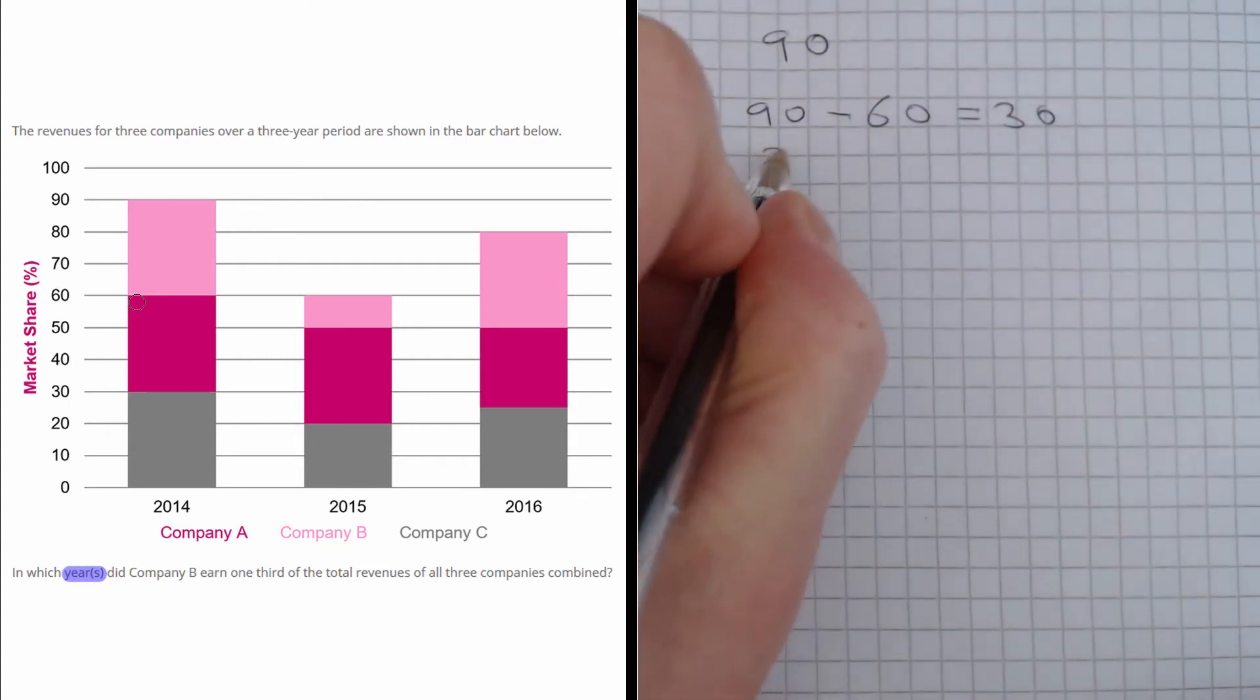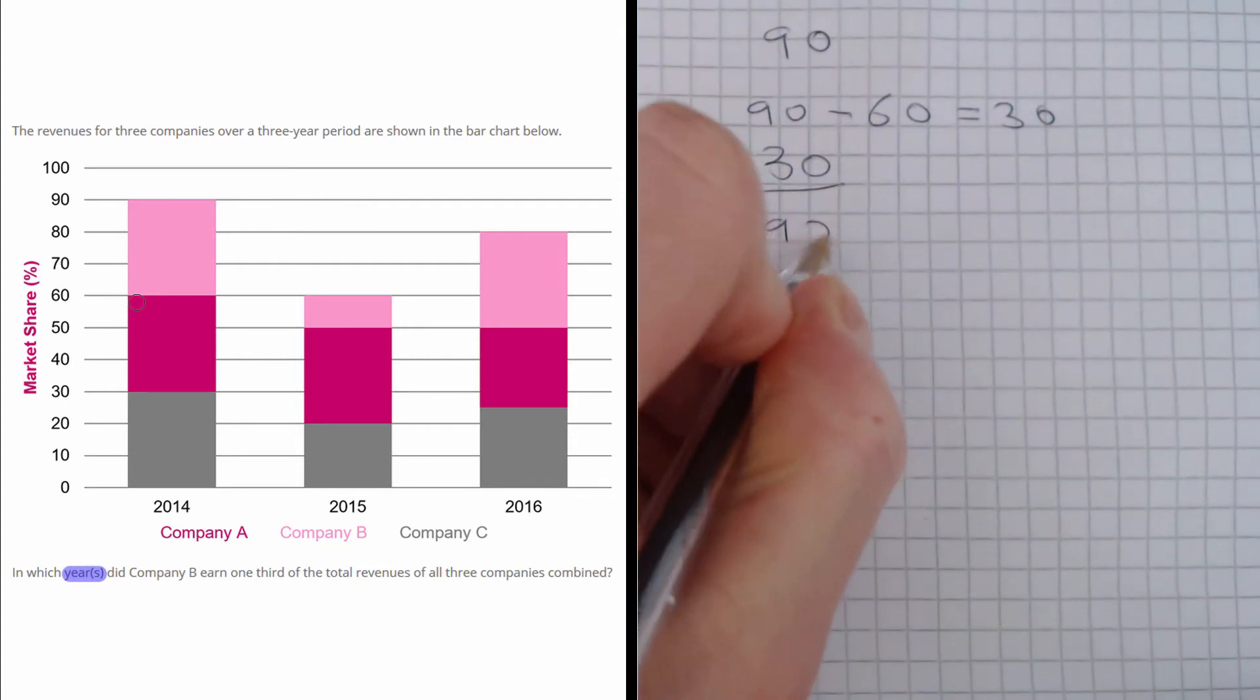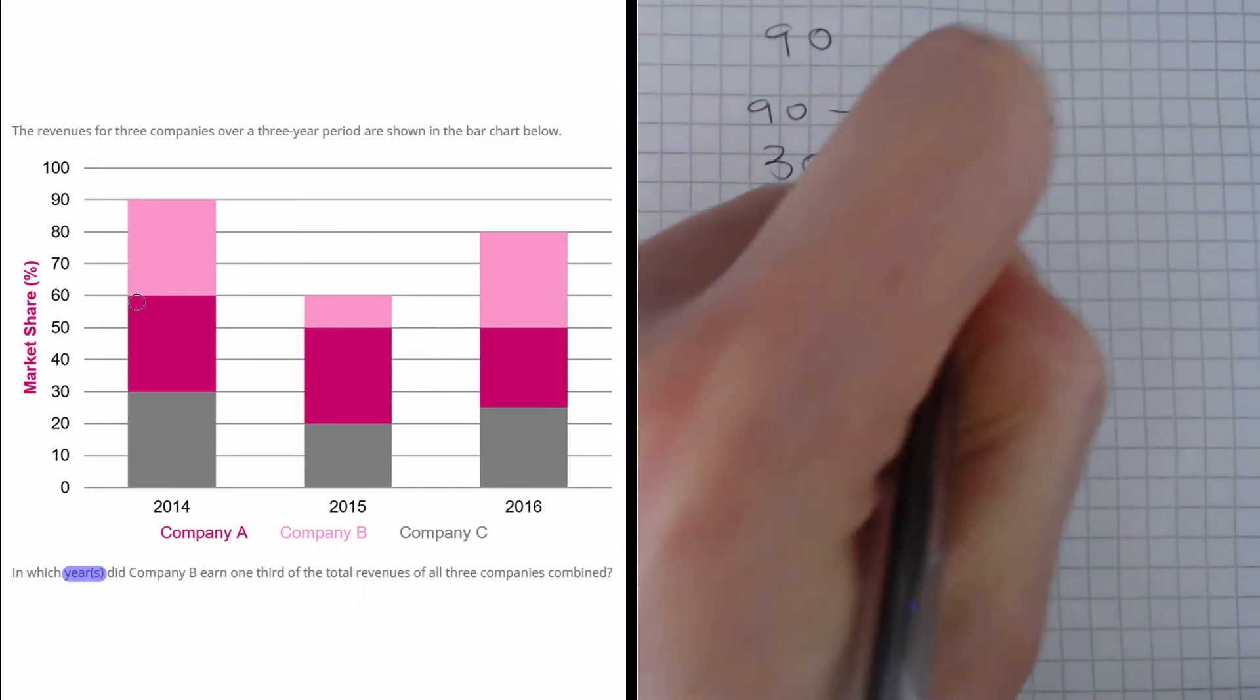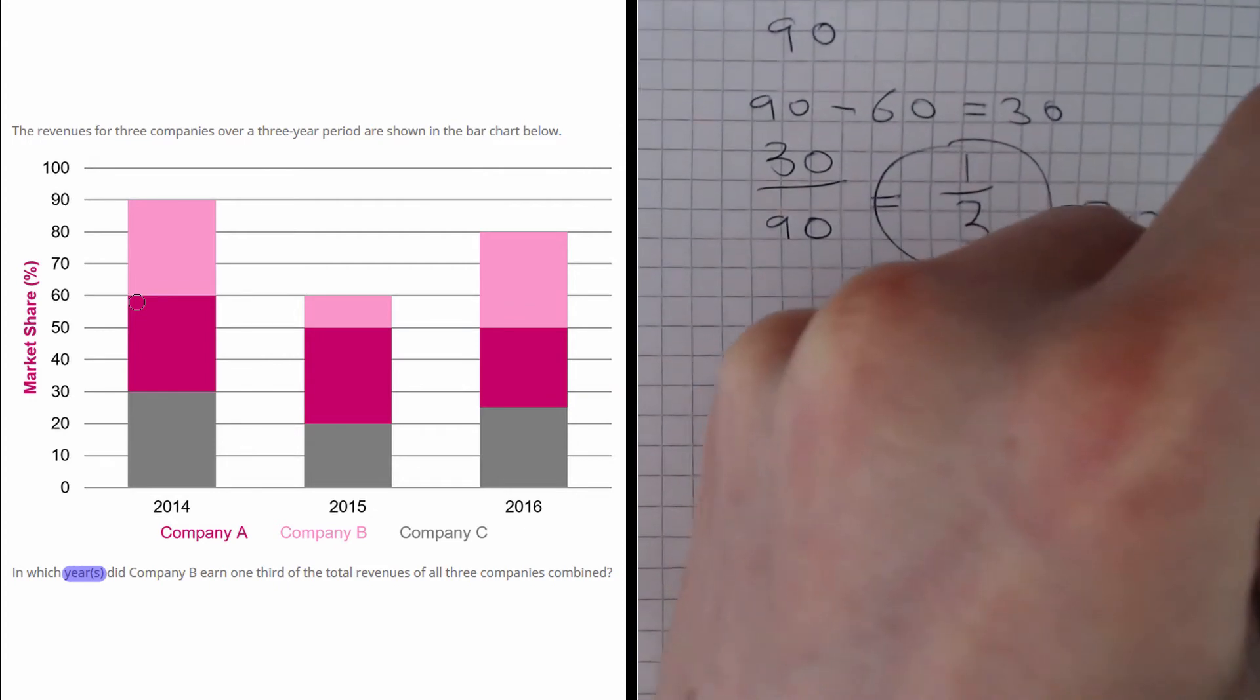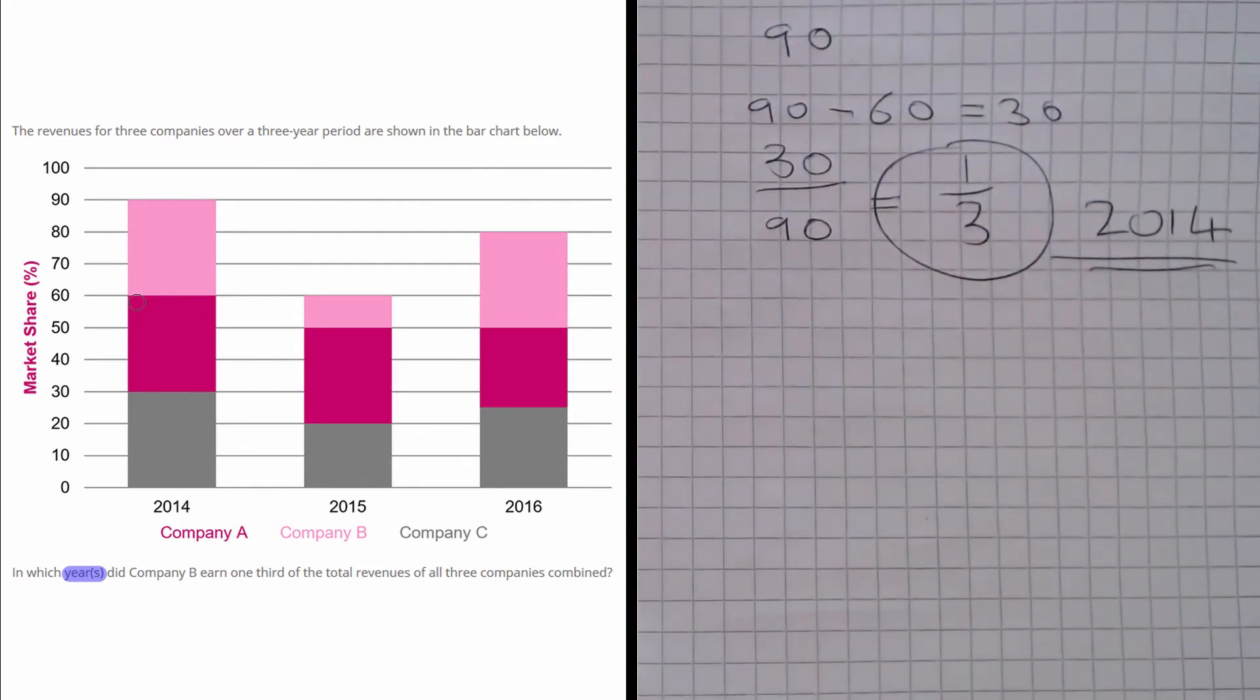So the proportion is 30 out of 90, which is a third, which is great. So 2014 is definitely one of the years.